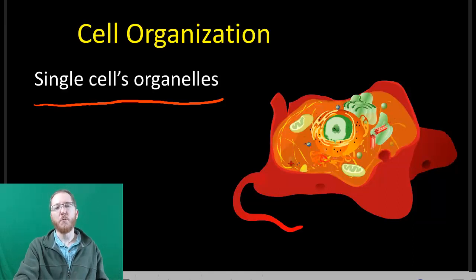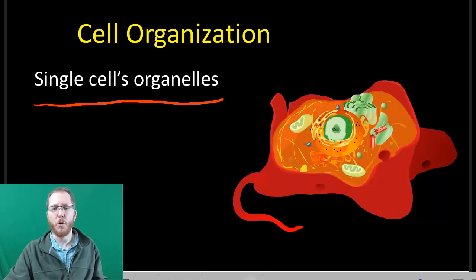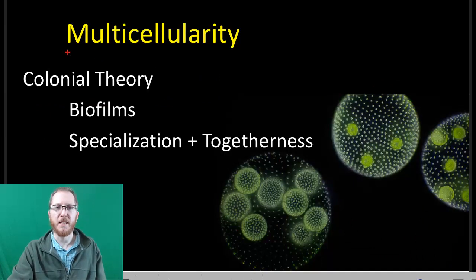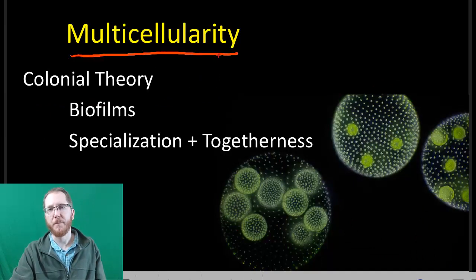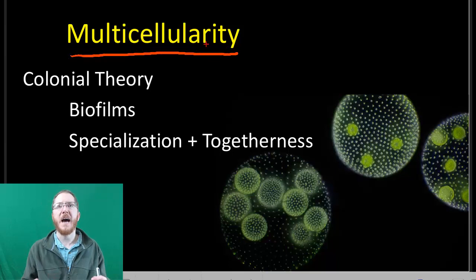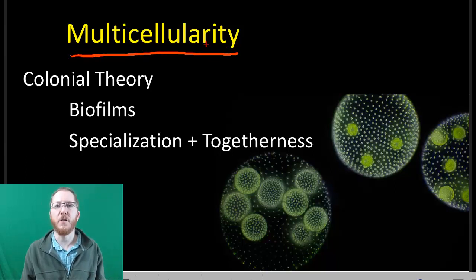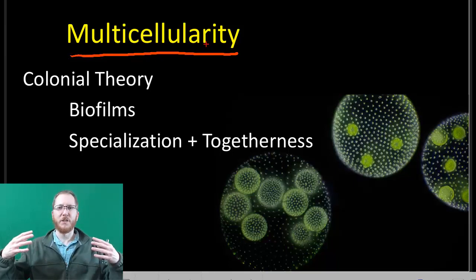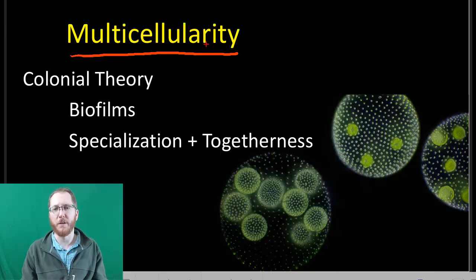If we ramp this up, we can talk about how organisms can organize beyond just a single cell. When we start to group cells together, we get multicellularity. But multicellularity does not appear to have just suddenly happened — it's not like a bunch of cells got together and stitched themselves into a multicellular organism all at once.